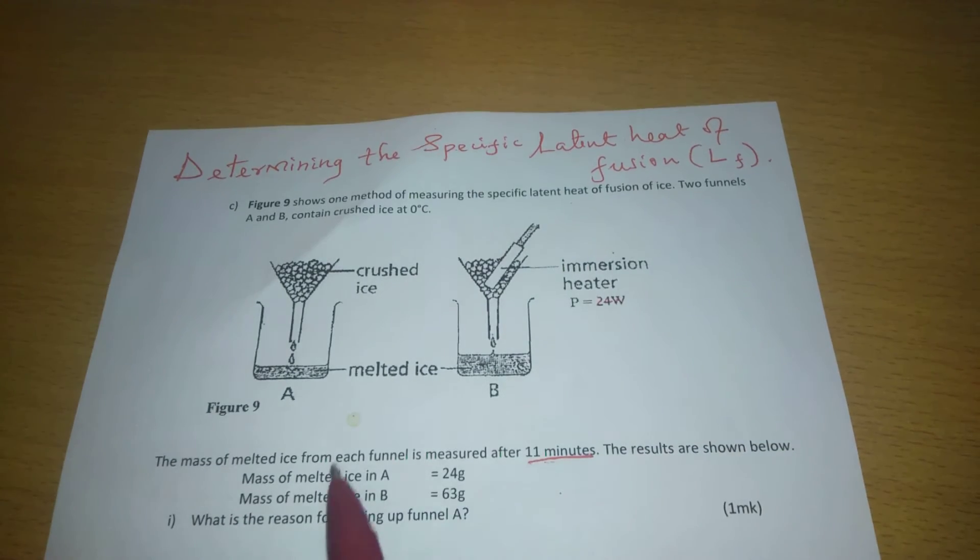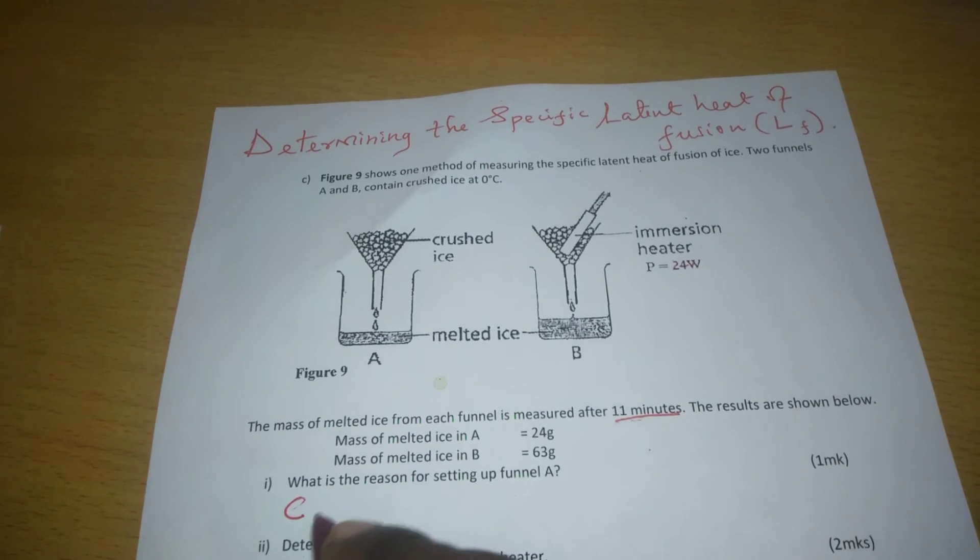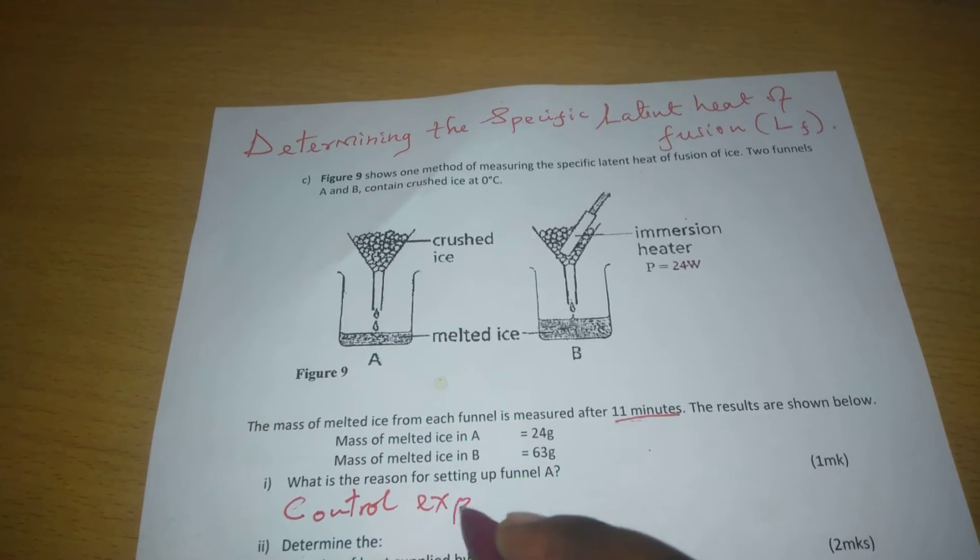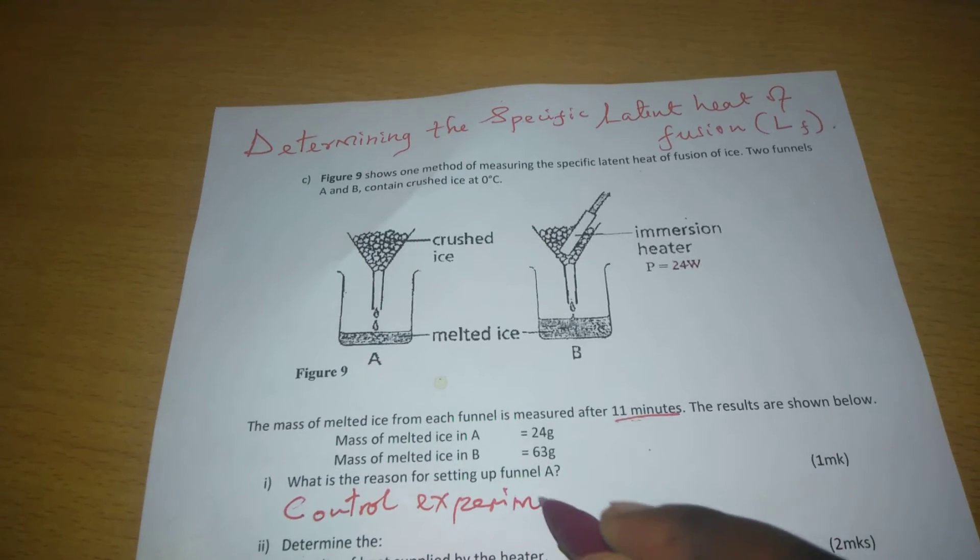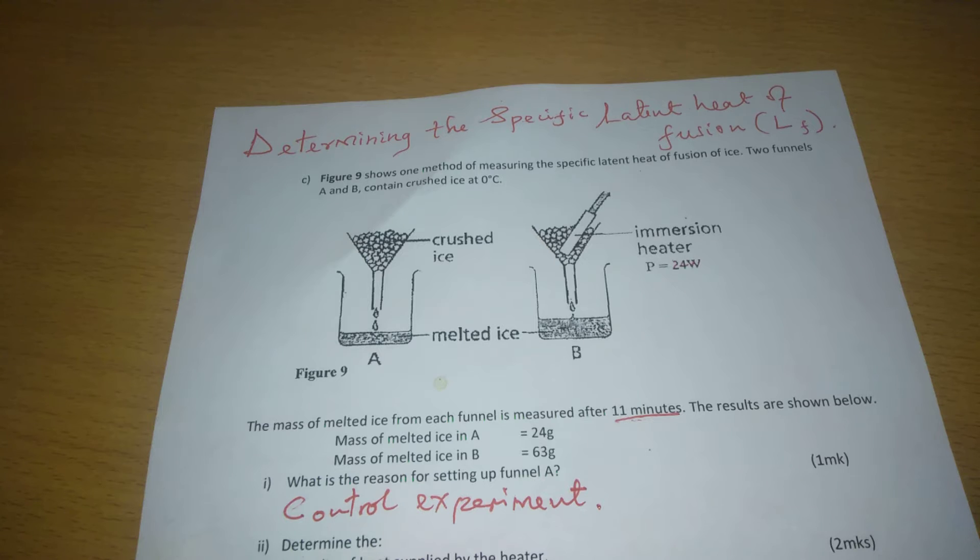What is the reason for setting up funnel A? We have set funnel A to act as a control experiment. A control experiment is a guide. It tells us what could still have happened even without putting an immersion heater.